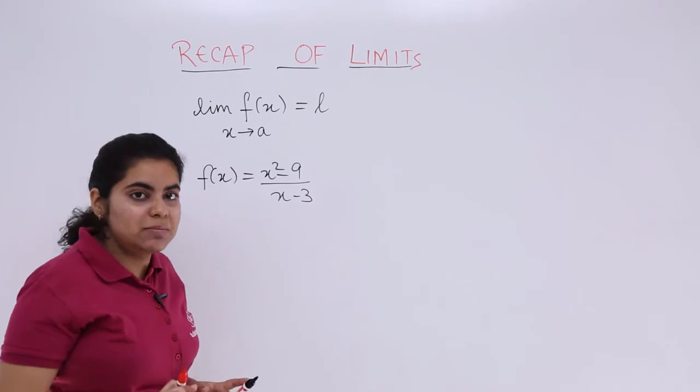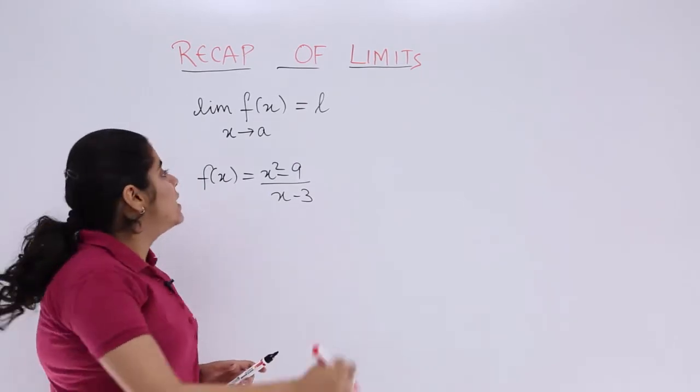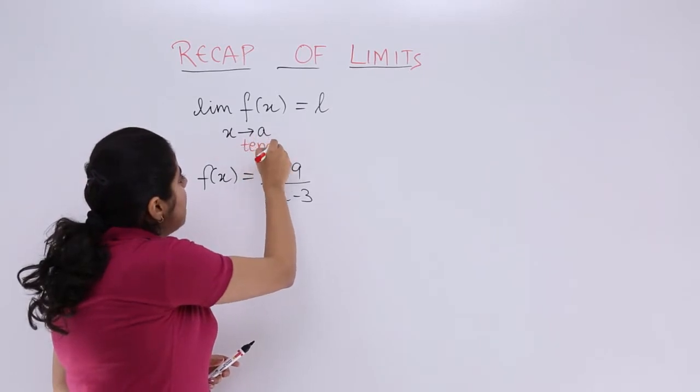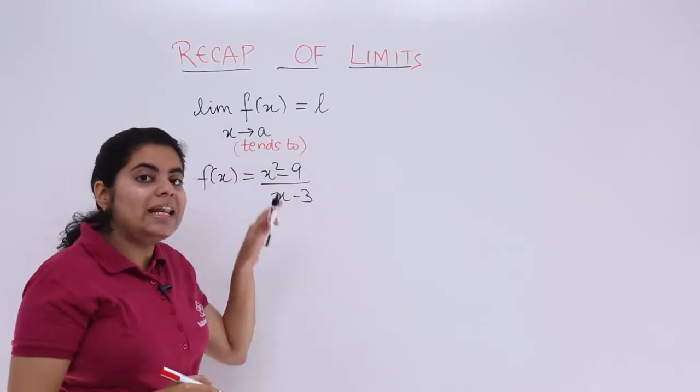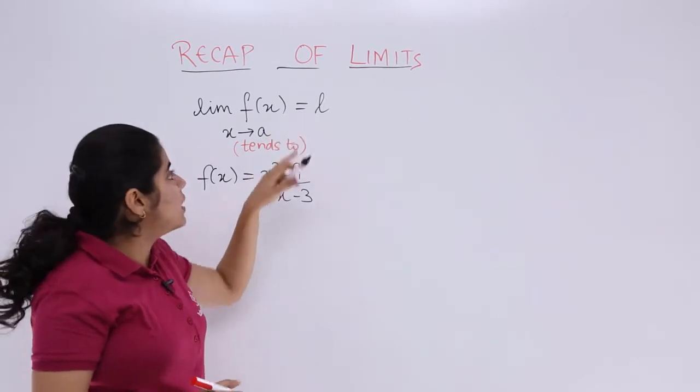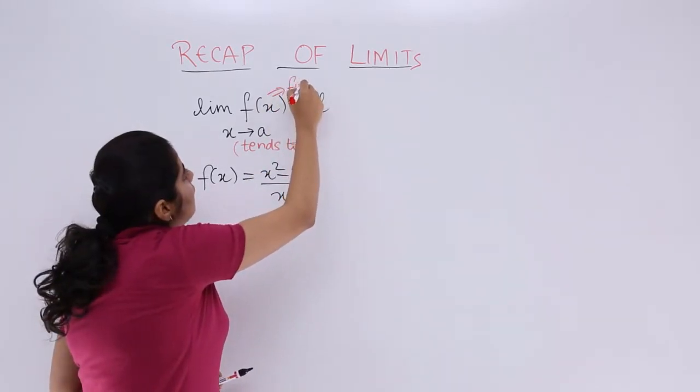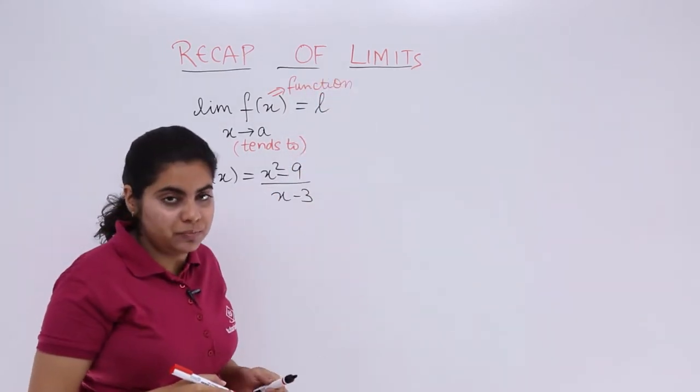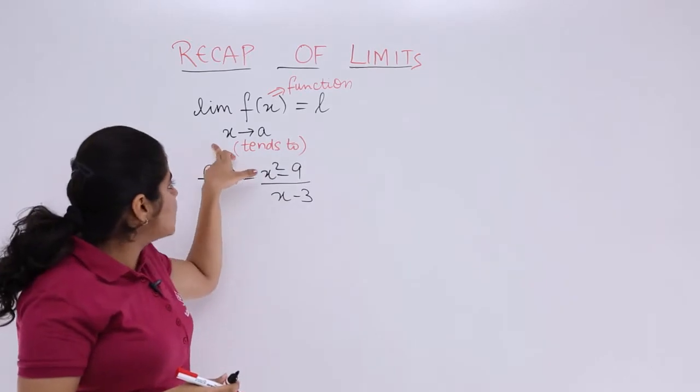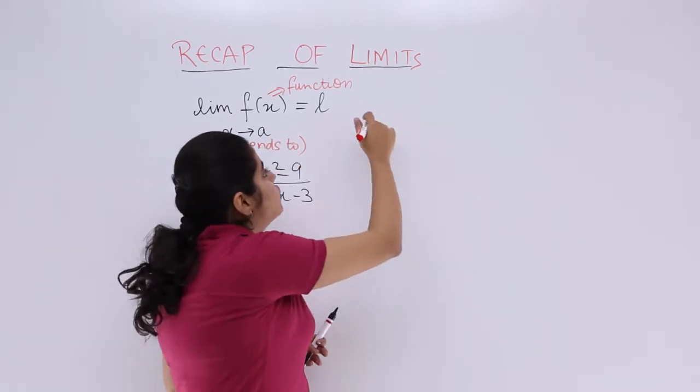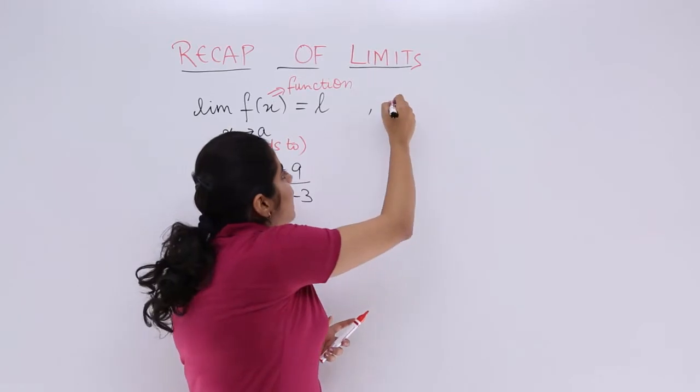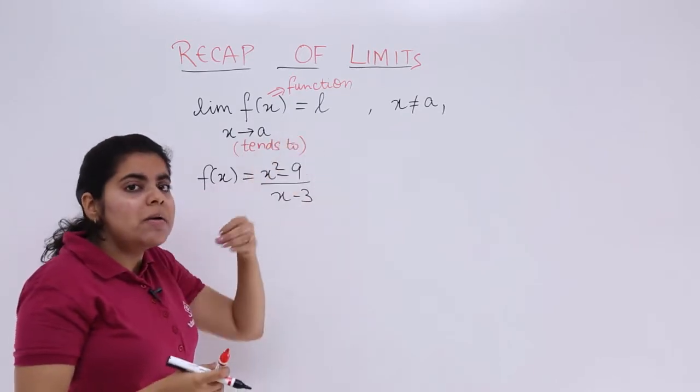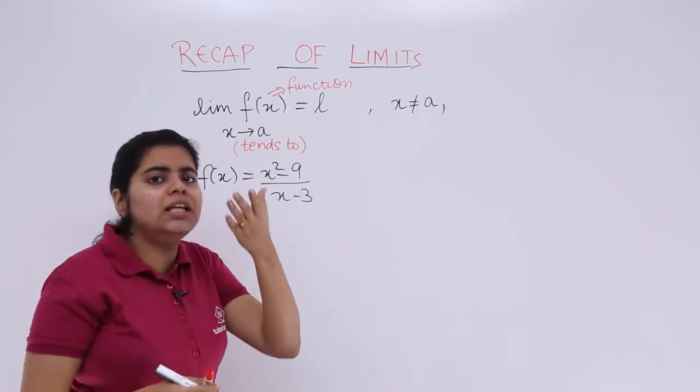Lim means we're talking about limits. x→a, this arrow is read as 'tends to,' and a is given. f(x) is the function we're considering, and l is the value of that function. What does x tends to a mean? It always means that x is not equal to a but is very near to a.